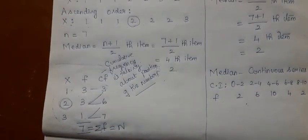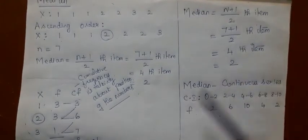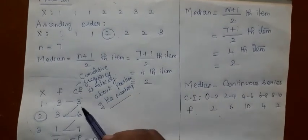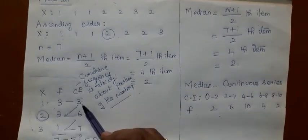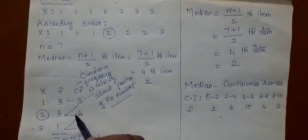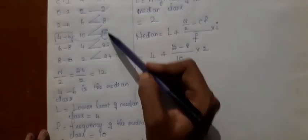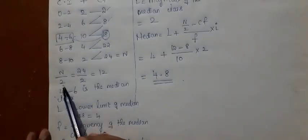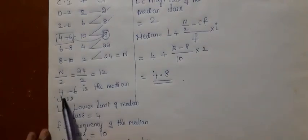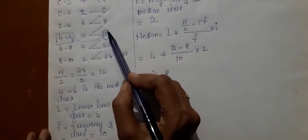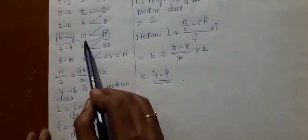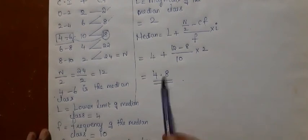For individual series, the formula is (n + 1) / 2 th item. For discrete series, construct a CF column; the formula is capital (N + 1) / 2 th item — locate the 4th item by leaving all CF values less than 4 and taking the first value greater than 4; the corresponding x value is the median. For continuous series, the formula is L + (N/2 − CF) / F × I. Construct the CF column, compute N by 2 — remember, not N plus 1 by 2 — leave values less than 12, take the value greater than 12 as the median class, and substitute into the formula to get the answer.